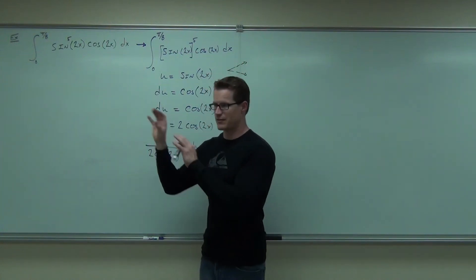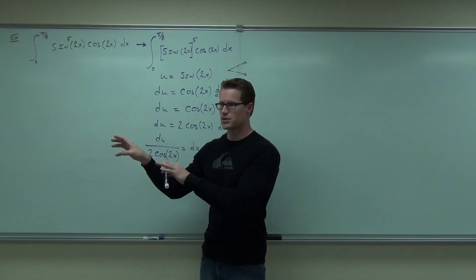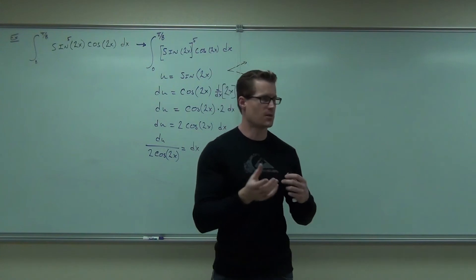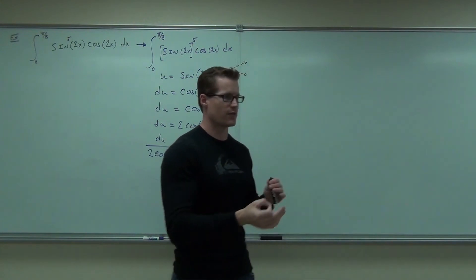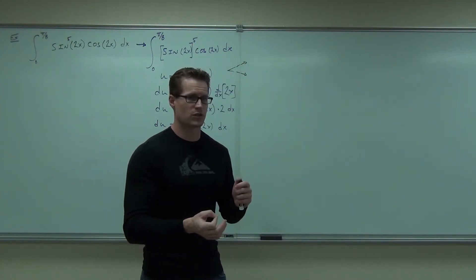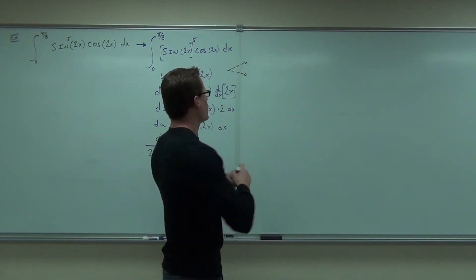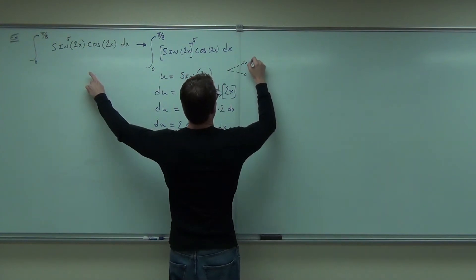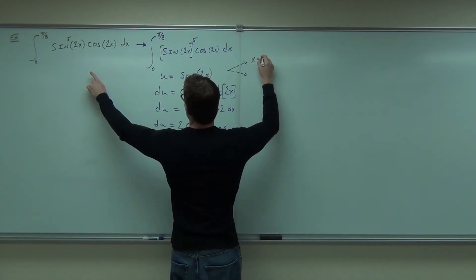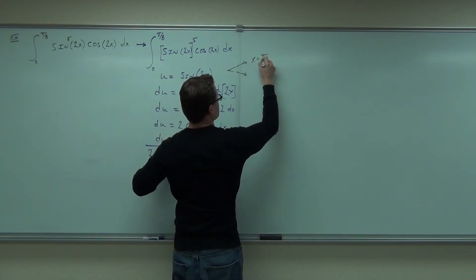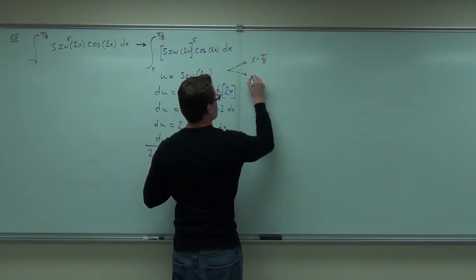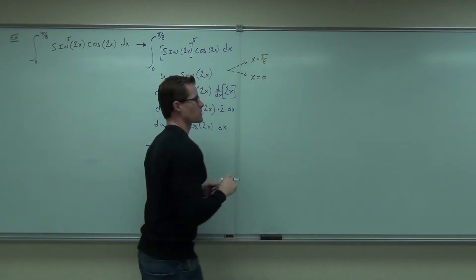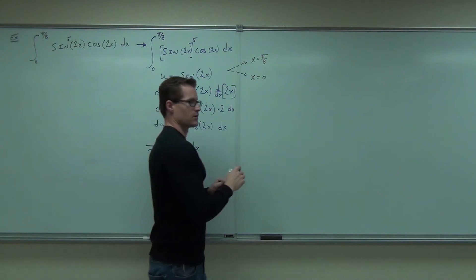The bounds change, and then you just have to plug in some numbers, rather than change everything back to sine of 2x and then have to plug in numbers and figure out sine of that again. So when we have x equals pi over 8 and x equals 0, let's figure out what those values are.